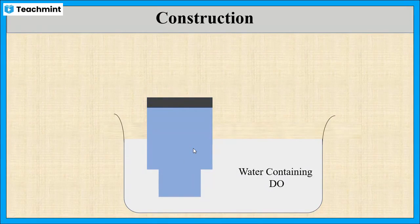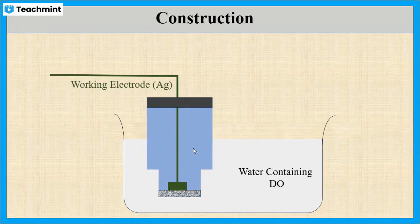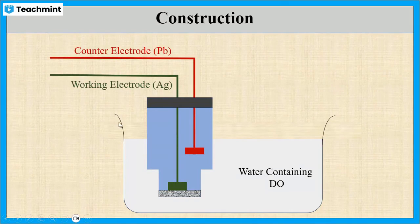The DO-sensor consists of a working electrode made up of silver and a counter-electrode made up of lead.